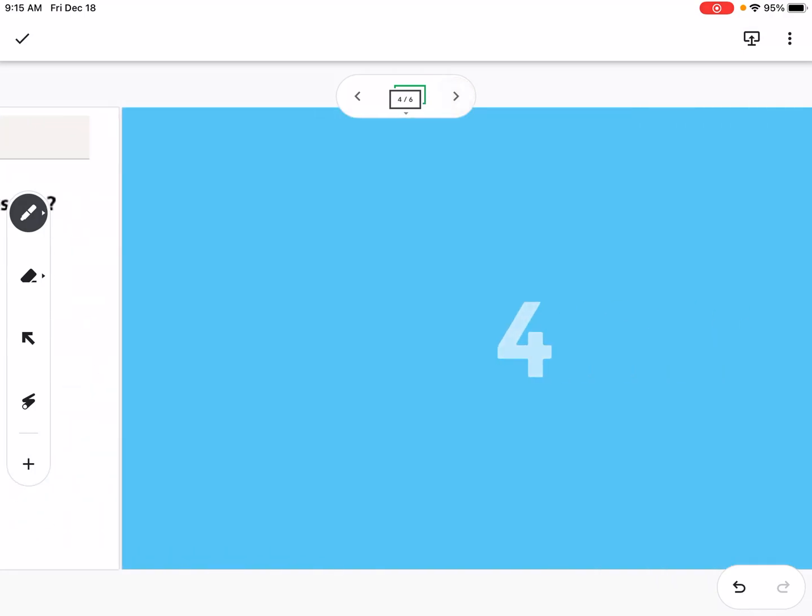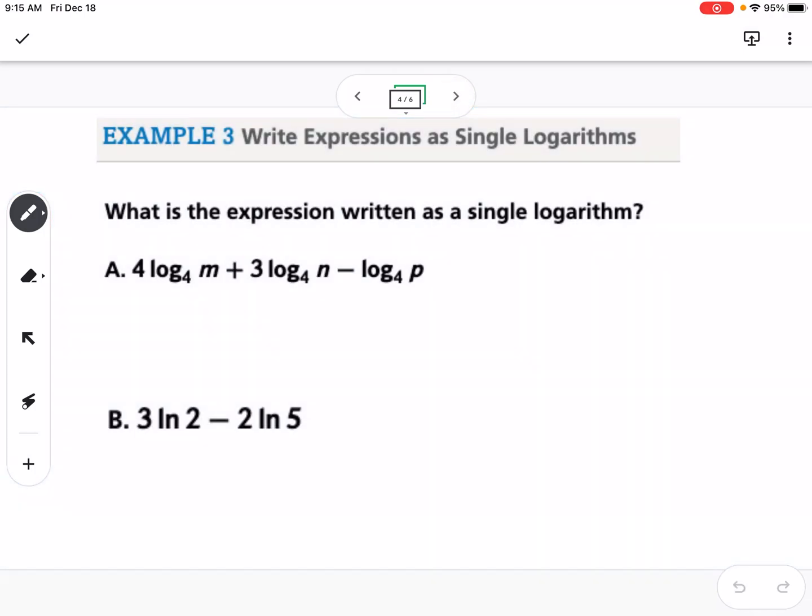Okay, for the next example, we are condensing, so now we're going in the opposite direction. So the first thing I want to do, it's kind of backwards process of what we did on the previous problems. So the first thing I'm going to do is move all of our multiplication values up as exponents. So this would be log base 4 of m to the 4th plus log base 4 of n cubed minus log base 4 of p.